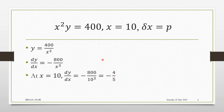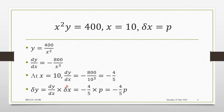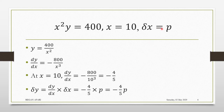The small change in y, delta y, is dy/dx times delta x. We know dy/dx is −4/5 and delta x is p, so delta y = −4/5 × p = −4p/5. What this means is there's a negative connection between the change in x and the change in y. When x increases by p, y would decrease by 4p/5 — it decreases because of the negative sign.